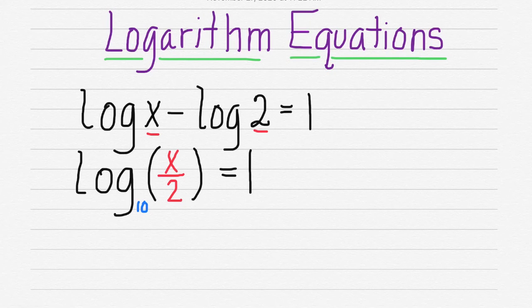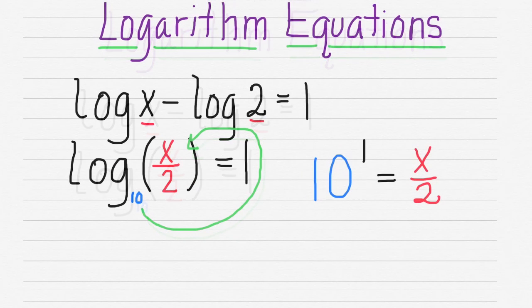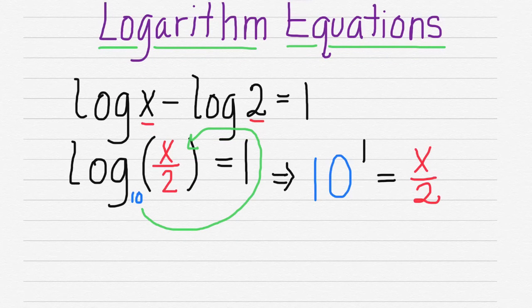We're going to take our base, which is 10. It's 10 because there was nothing there and that's the default. Then we're going to apply our exponent and come up with this solution. So now we have 10 to the 1 is equal to x over 2.